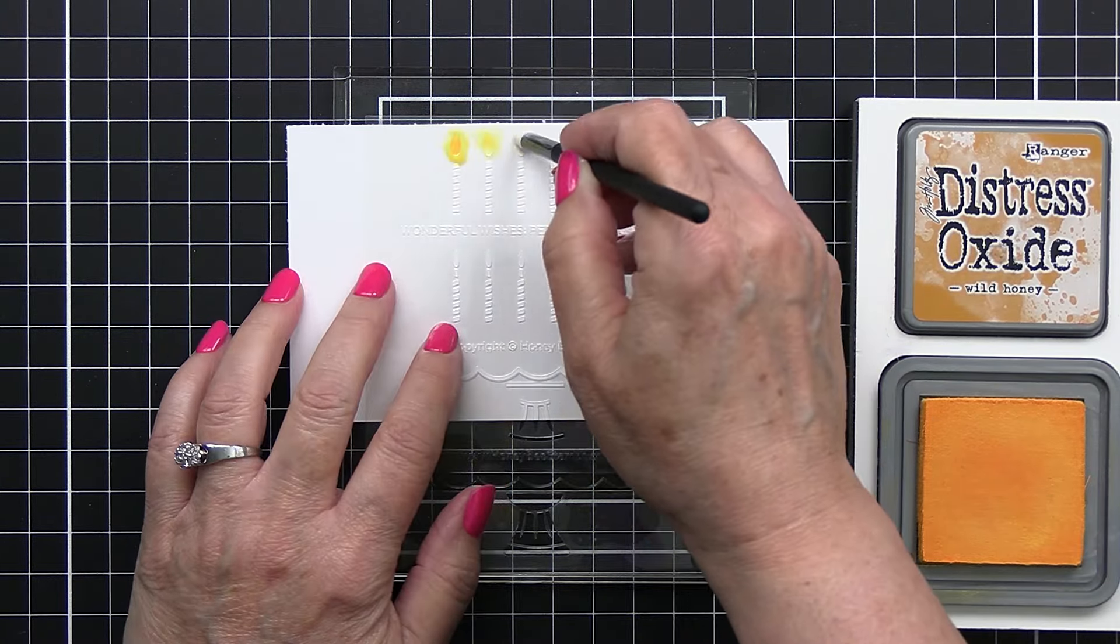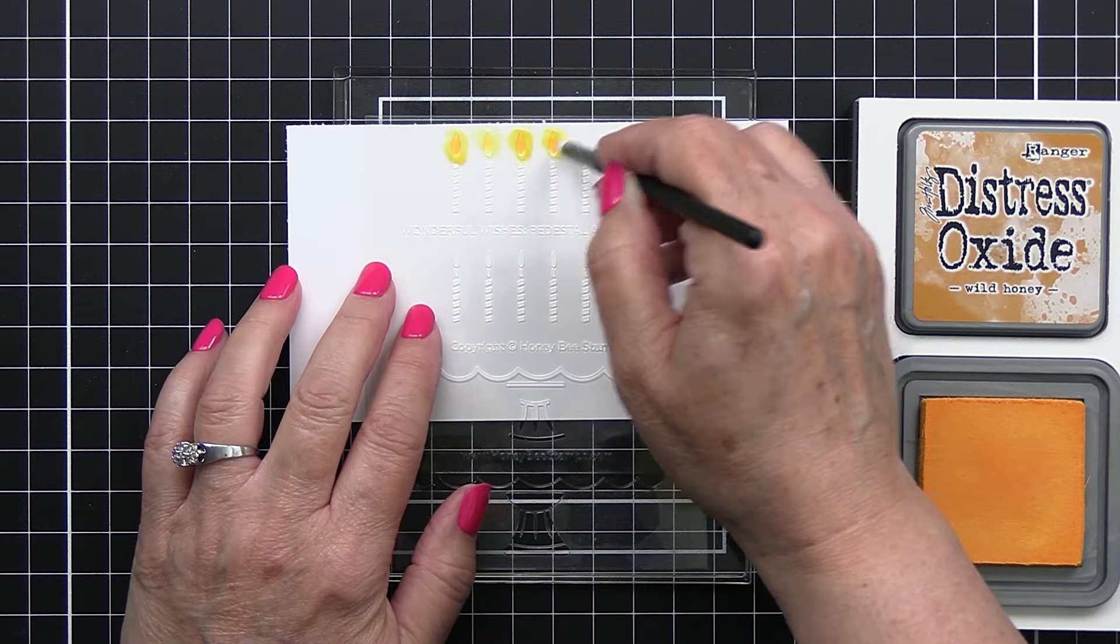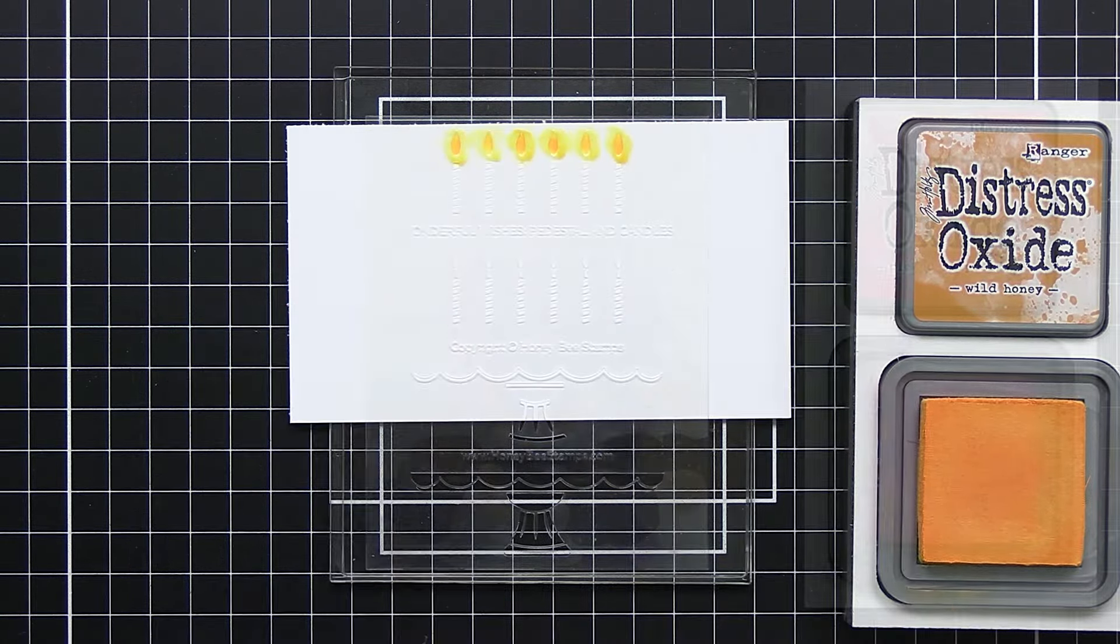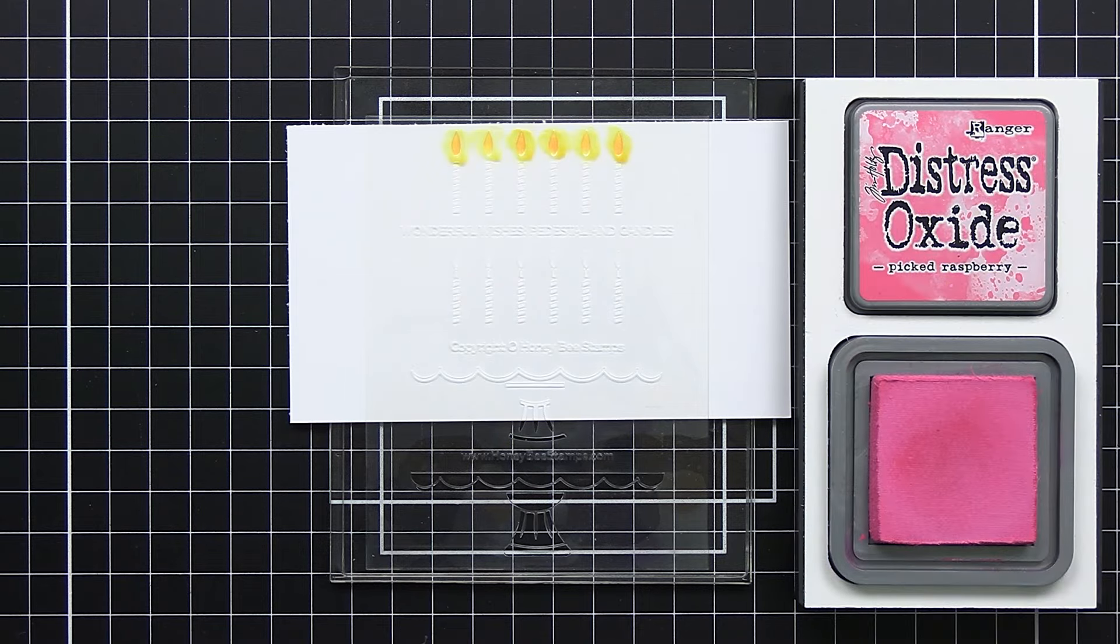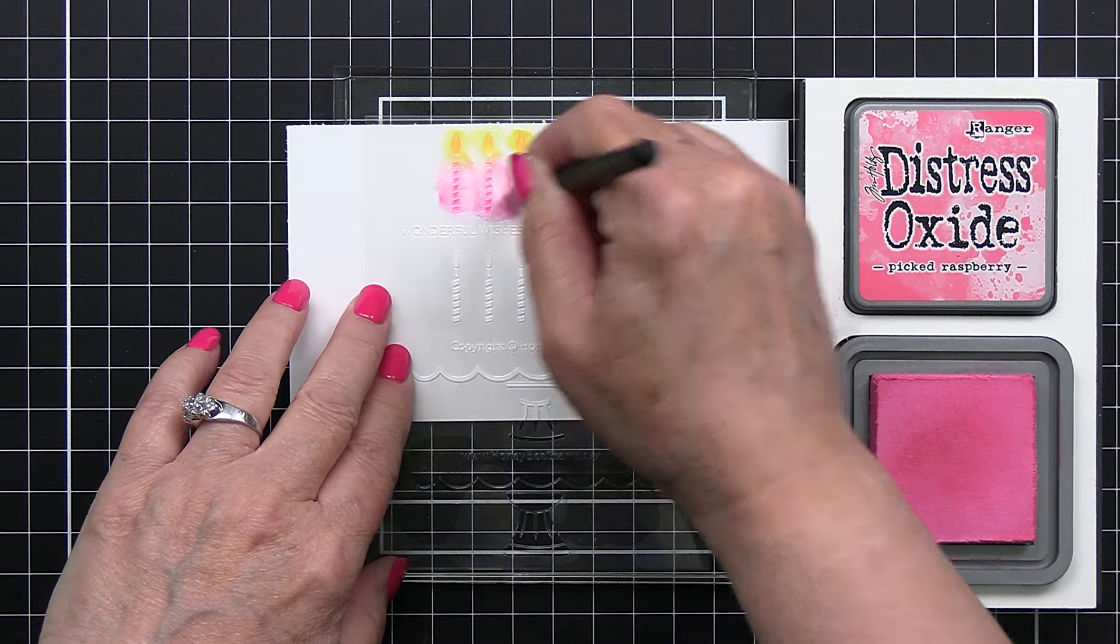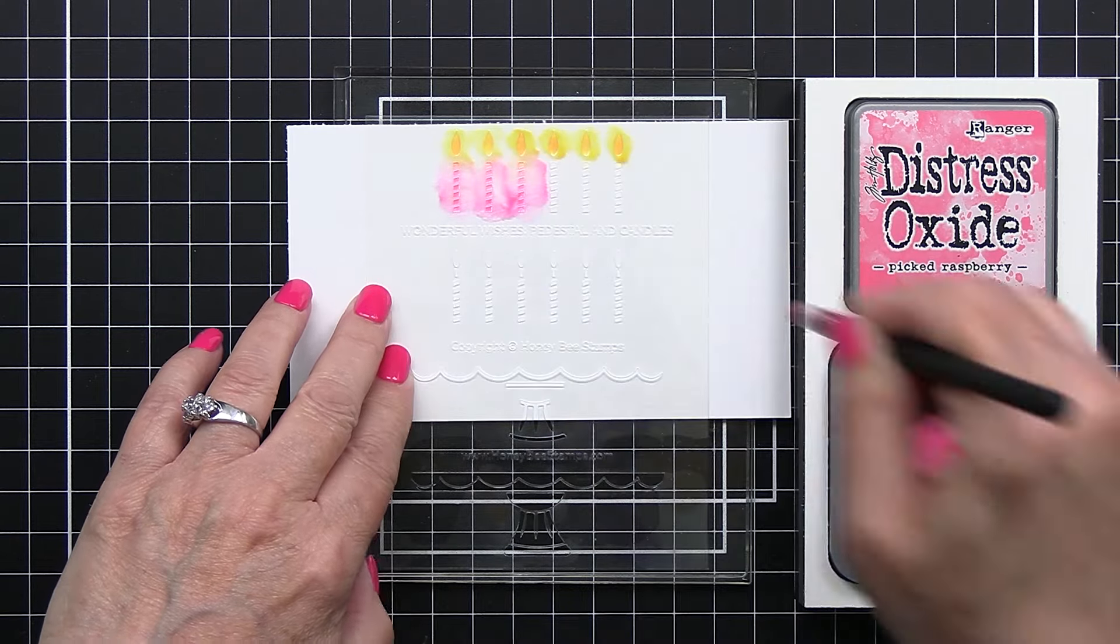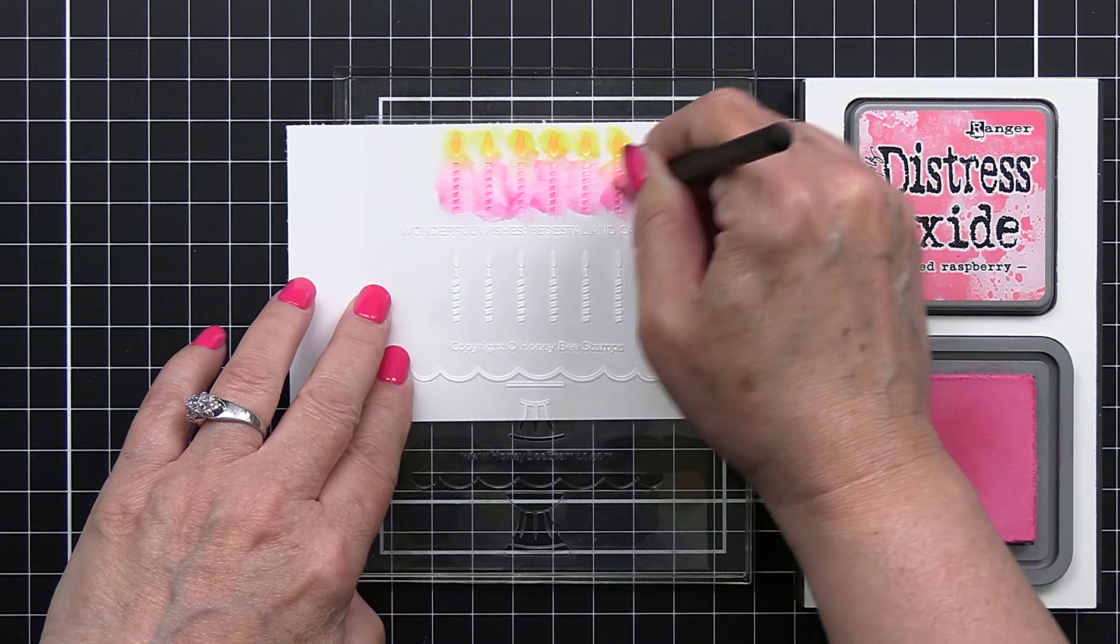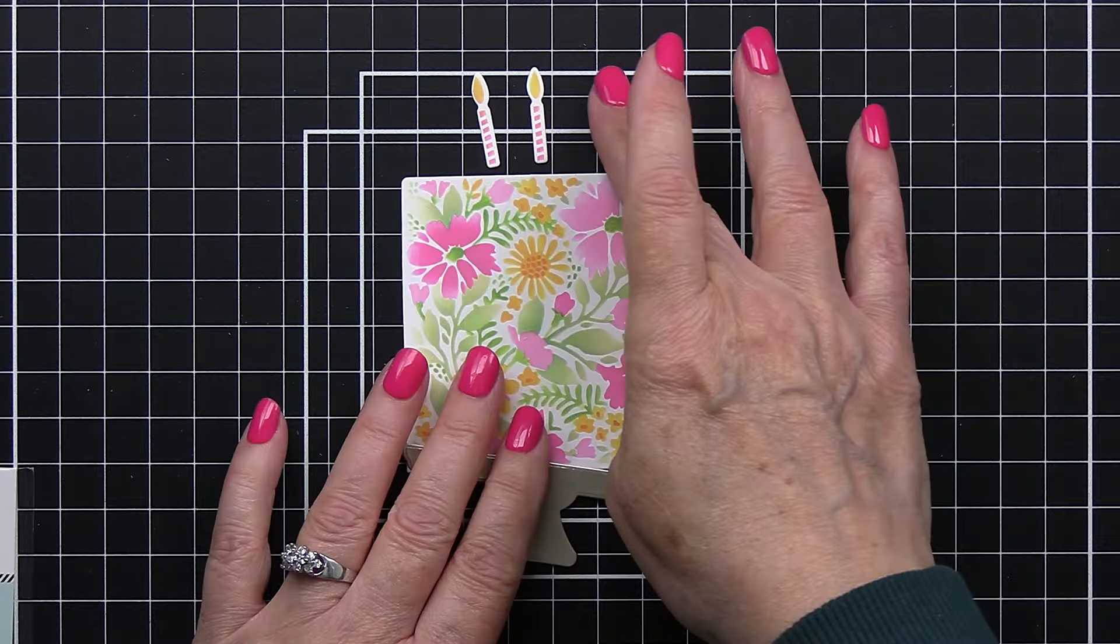Now this is the candle stencil. This stencil also can be used to create some details for the stand for the cake and I'm going to just go in with the same colors I've already used—the wild honey for the flames and then the picked raspberry for the stem of the candles or the bottom of the candles. That's just going to be a really simple and easy way to get those and then I'll die cut those out.